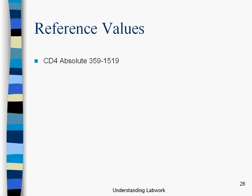The reference values — these are the quote-unquote normal values. One of the things that's really complicated about this: CD4 absolute reference values are listed as 359 to 1519. That's one particular lab's range of what's normal for a CD4 absolute count. But if you get your blood drawn from Quest Labs, their reference range is going to be different than if you get it processed by LabCorp. Each place that processes labs is going to have a different range of what's normal. That's why we put 'normal' in air quotes — it's relative to the place providing it, and it's a really huge range: 400 to 1500.